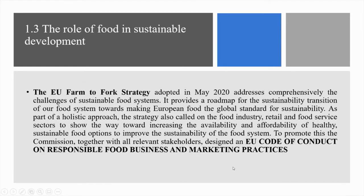Subchapter 1.3: The Role of Food in Sustainable Development. The EU Farm to Fork Strategy, adopted in May 2020, addresses comprehensively the challenges of sustainable food systems. It provides a roadmap for the sustainability transition of our food system towards making European food the global standard for sustainability. As part of a holistic approach, the Strategy also called on the food industry, retail and food service sectors to show the way toward increasing the availability and affordability of healthy, sustainable food options. The Commission, together with all relevant stakeholders, designed an EU code of conduct on responsible food business and marketing practices.